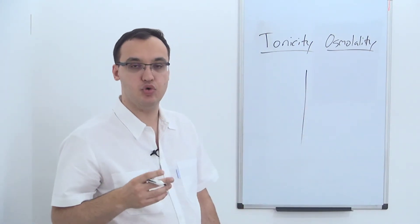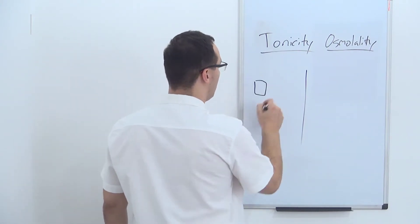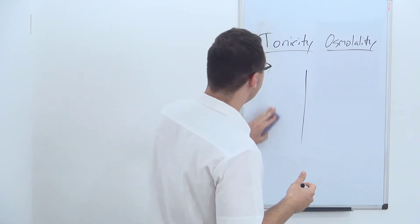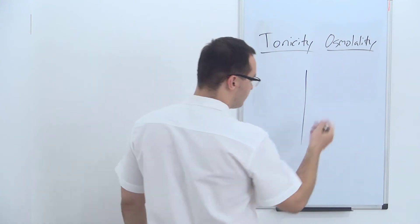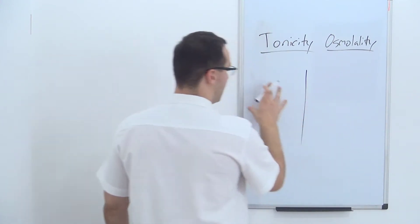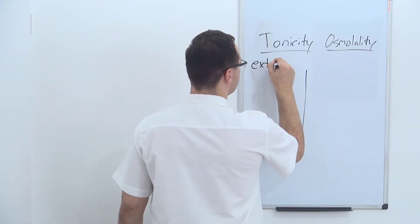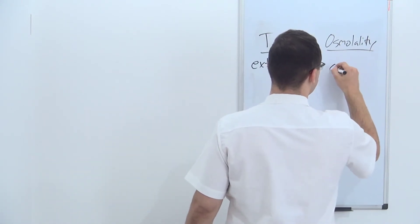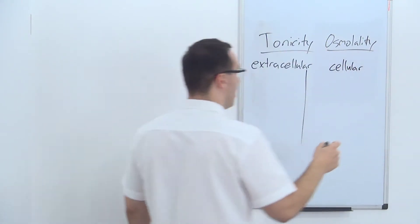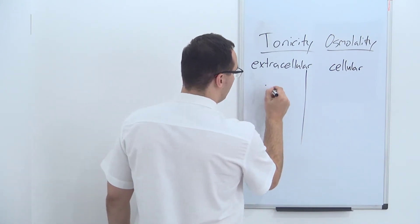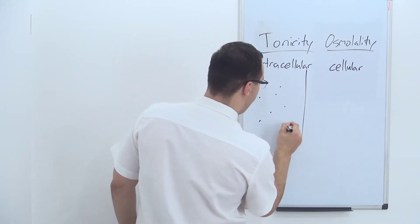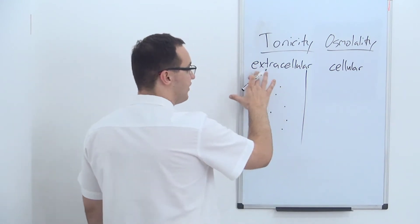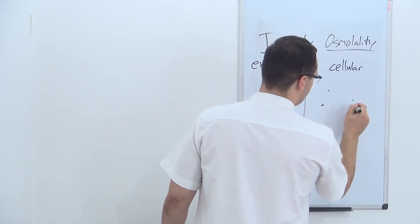If we have a cell membrane — your whole body is composed of cells and the cells have a cell membrane. This side is inside the cell, and this side is outside, which we call extracellular. You have a lot of solutes — ions, sodium, glucose, and all kinds of stuff — here in the extracellular space, and the same goes for the intracellular space.